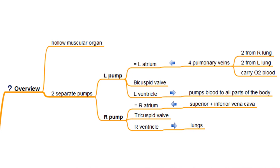The right pump is on the right side of the heart. It is made of the right atrium, which receives blood from all parts of the body, not from the lungs. Blood passes from the right atrium through a valve to the right ventricle, which pumps blood to the lungs to be oxygenated.